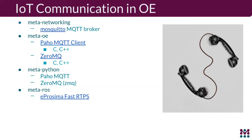In OpenEmbedded there are recipes for all of these. In meta-networking, for example, there is Mosquitto, an MQTT broker from the Eclipse Foundation. There are also MQTT clients, including the PAHO MQTT client, also from Eclipse. ZeroMQ has recipes for C and C++ libraries as well as Python bindings. Since meta-ROS adopted DDS, they use eProsima Fast-RTPS, an open source DDS implementation, and there's a recipe for that.